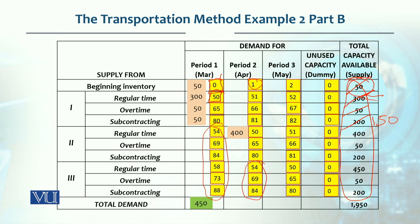Next, overtime cost is $65. Regular production for the first period should have been $51, but we've already fully utilized it. So we've reached 450 units. There are 100 units of unused capacity available in period two, so the 550-unit demand for period two has been met.